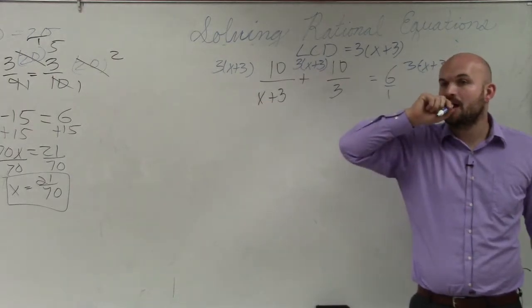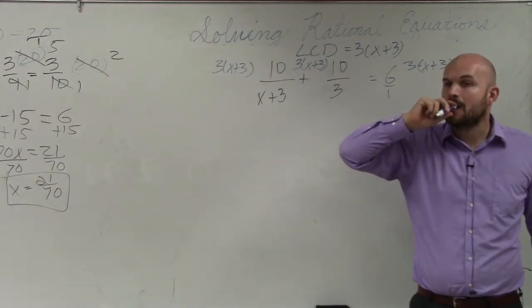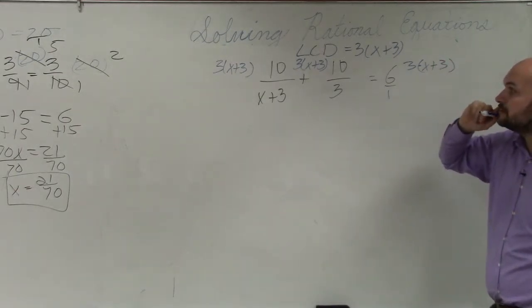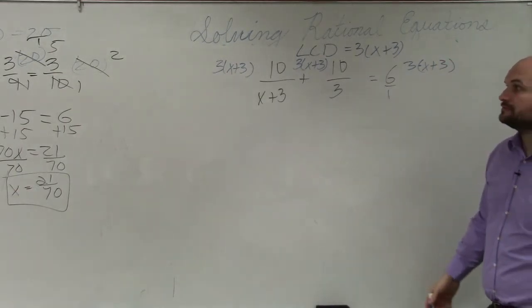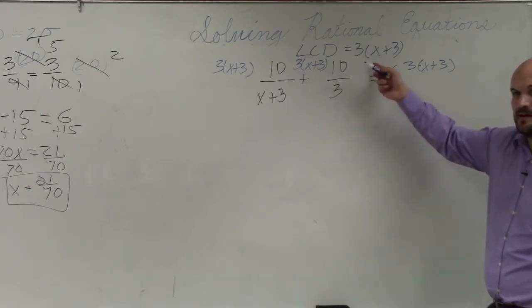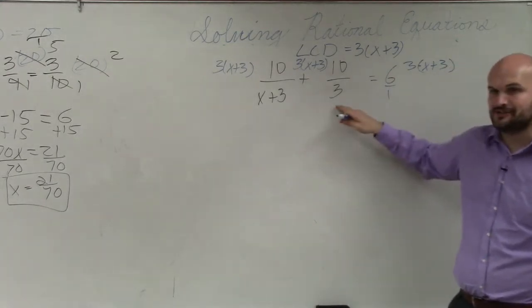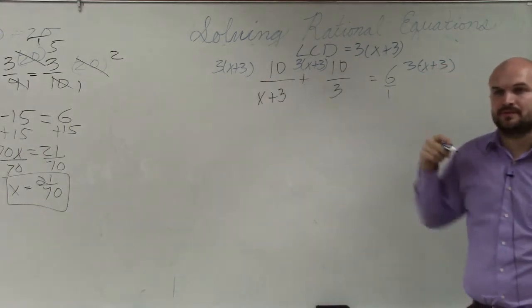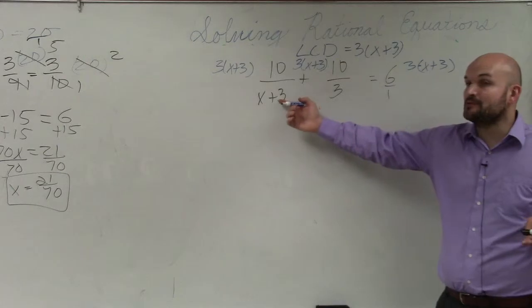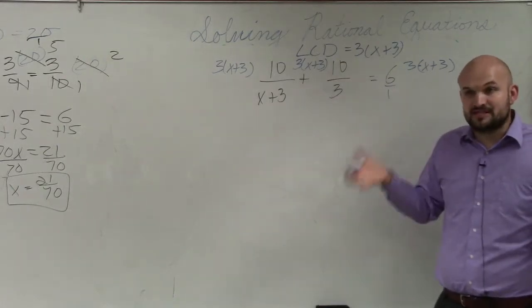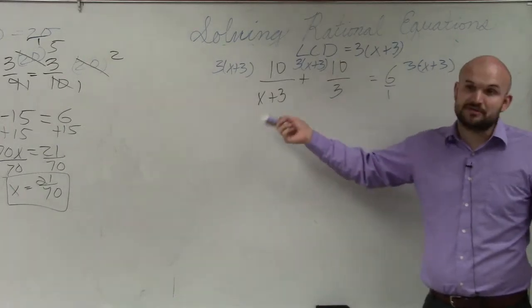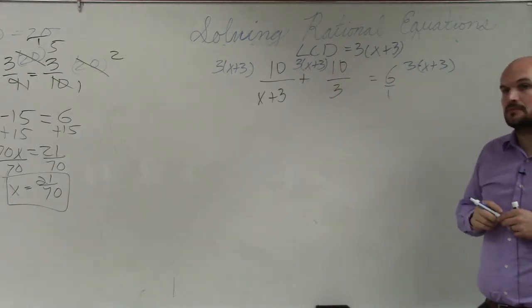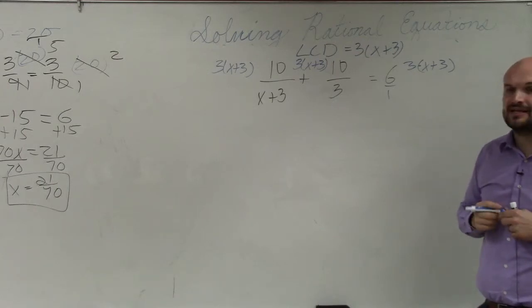Why don't you do the LCD for 3x plus 3? This is the common denominator. These have expressions as your denominators. Over there we have numbers as our denominators. So we've got to find the common denominator between 3 and x plus 3. What is the smallest expression that 3 and x plus 3 divide into? That's it. x plus 3 does not divide into 3.